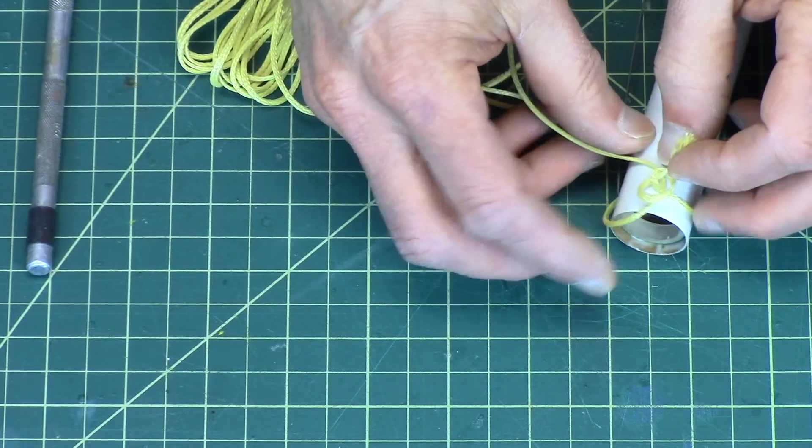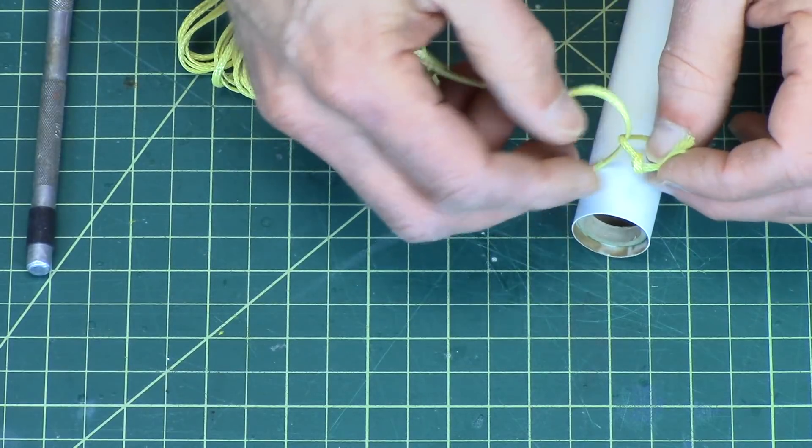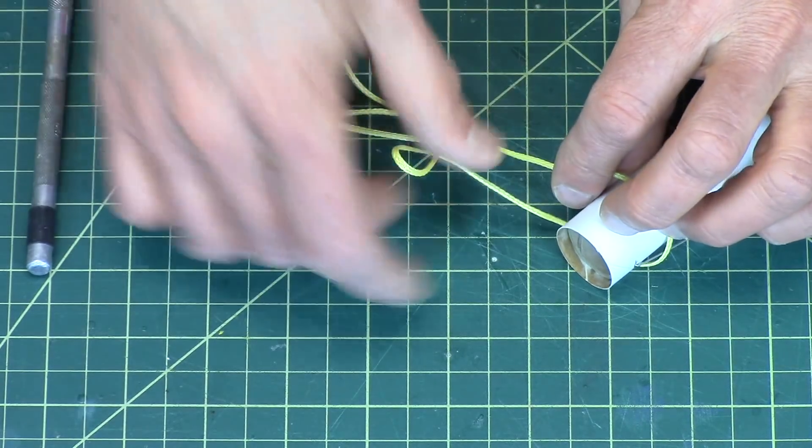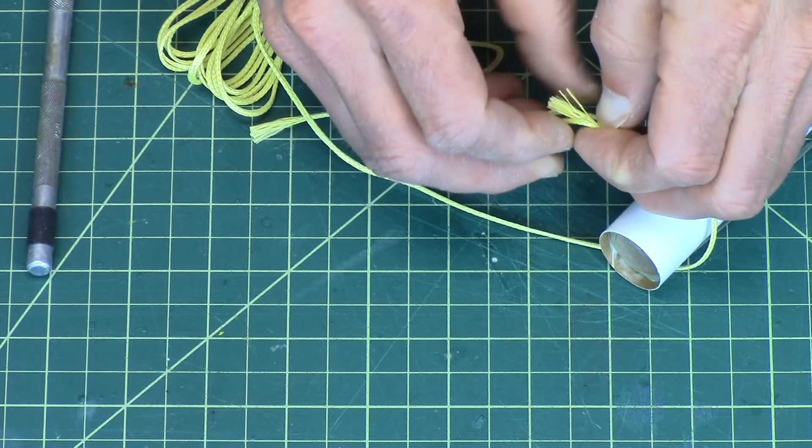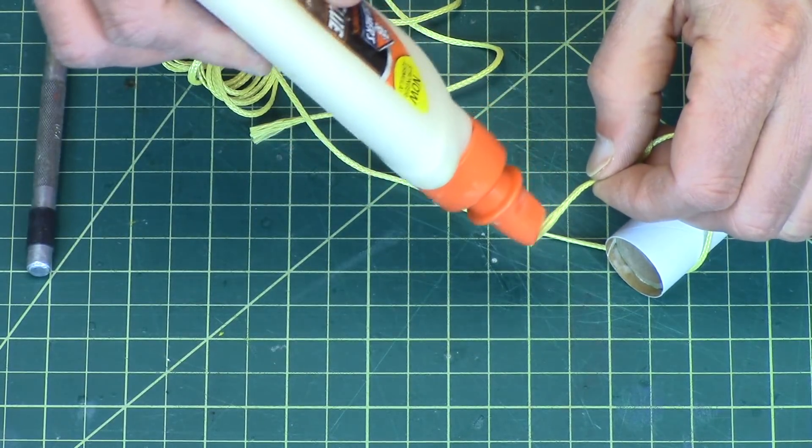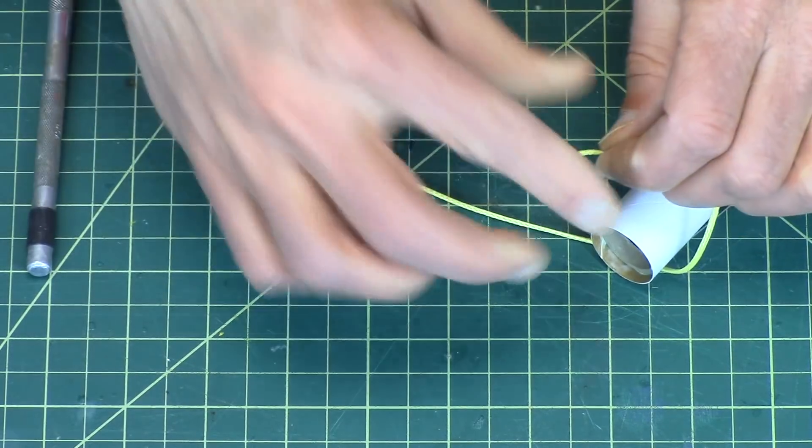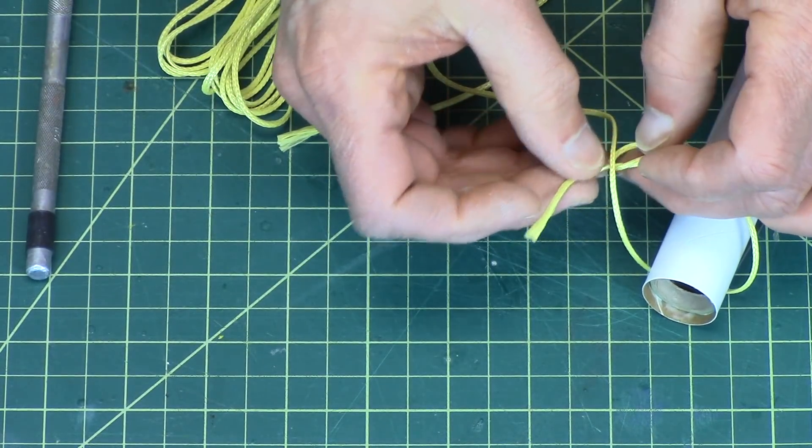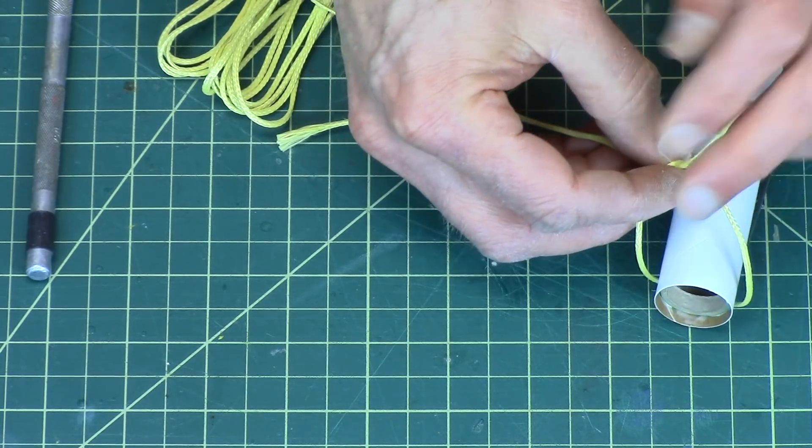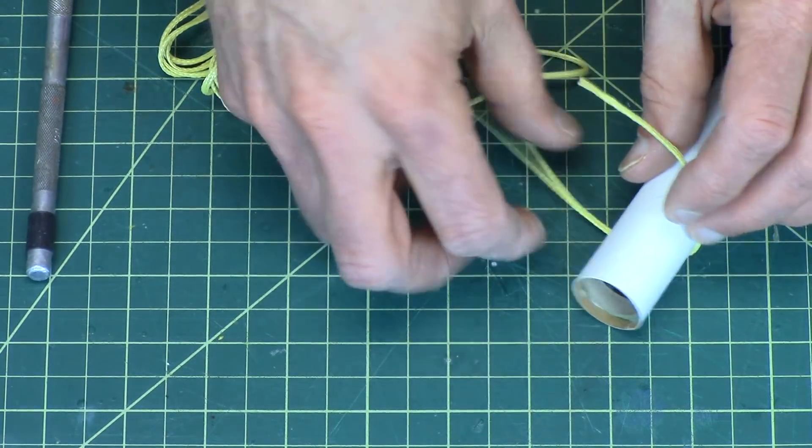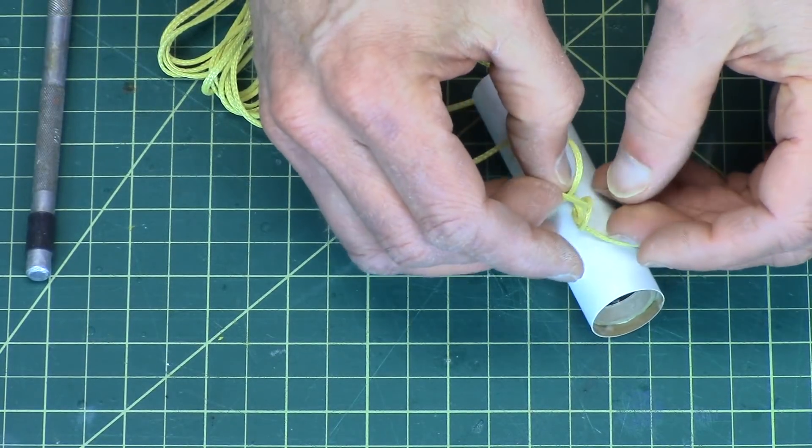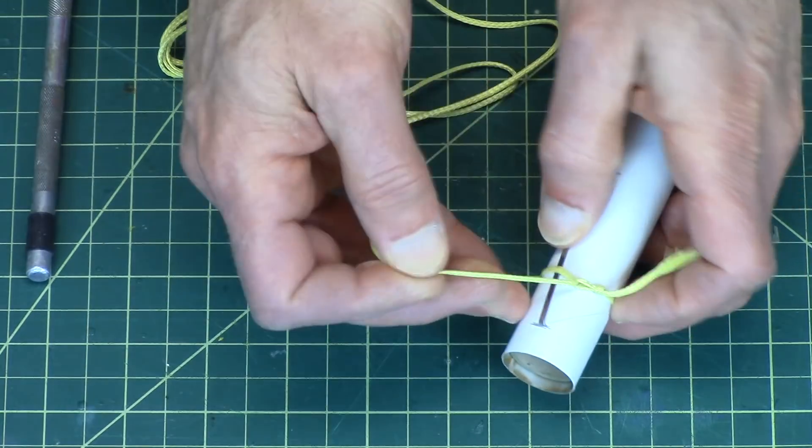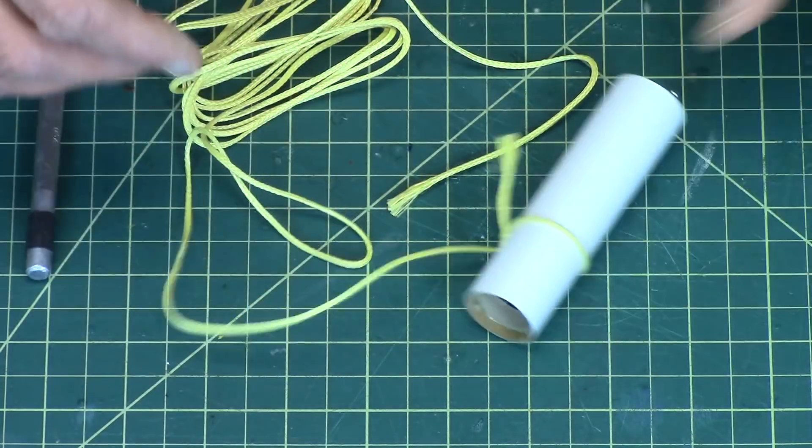The end of the Kevlar always frays like that, and I hate that when that happens, but it happens. If that is bothering you like it's bothering me, just take some glue, just smear it in there, and it will stiffen it right up. There we go. Okay, now I want it nice and tight up against the tube like that.